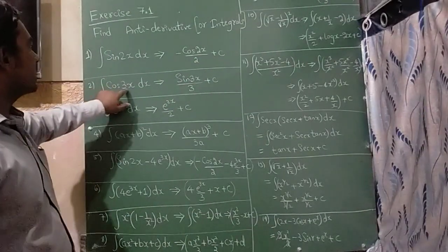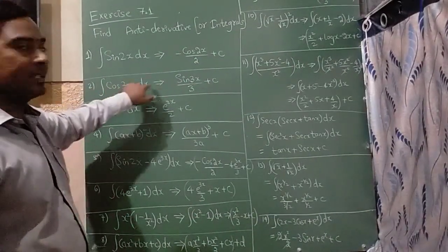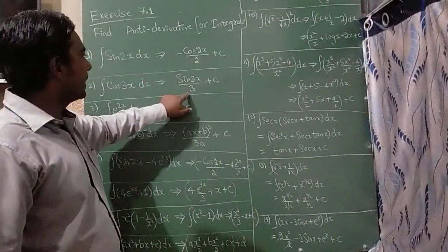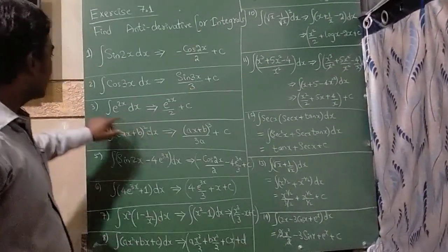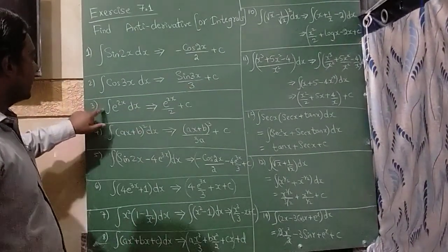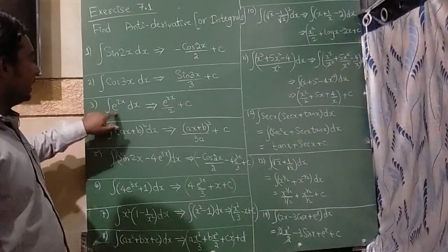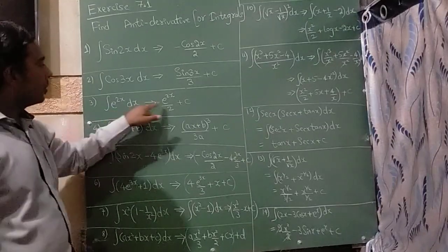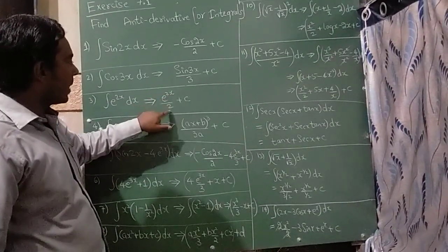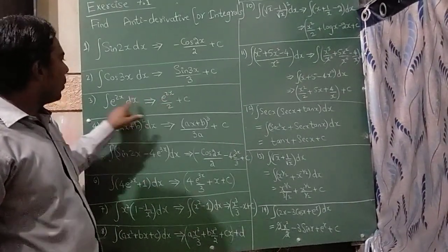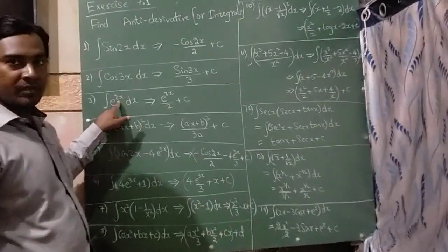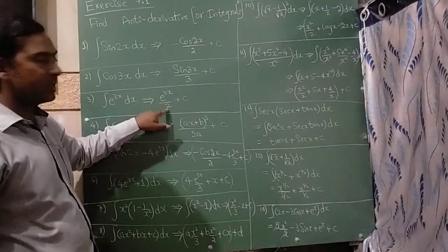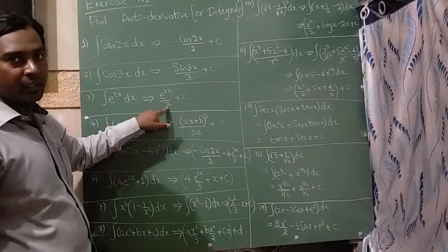The integration of cos 3x dx is sin 3x divided by 3, plus c. The third question is integration of e raise to 2x dx, and the answer is e raise to 2x upon 2. Whatever number comes in the exponent, the same number comes in the denominator.